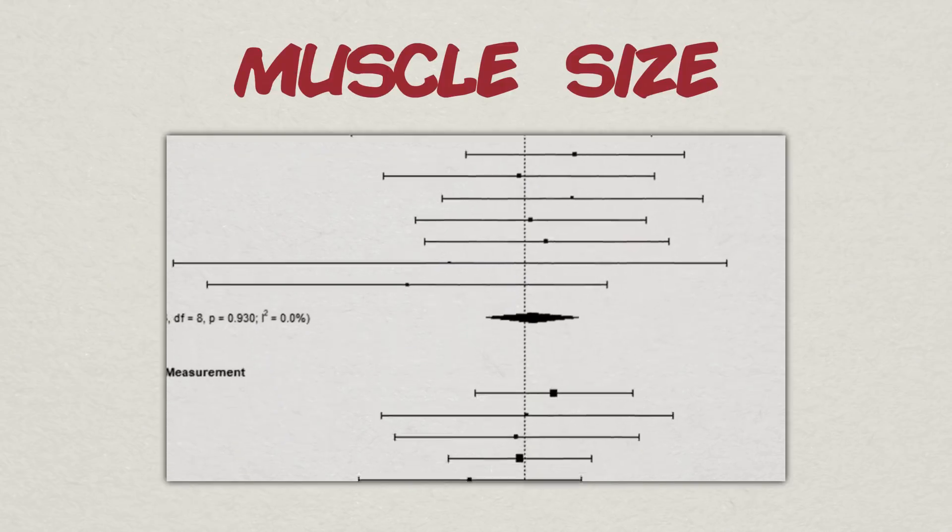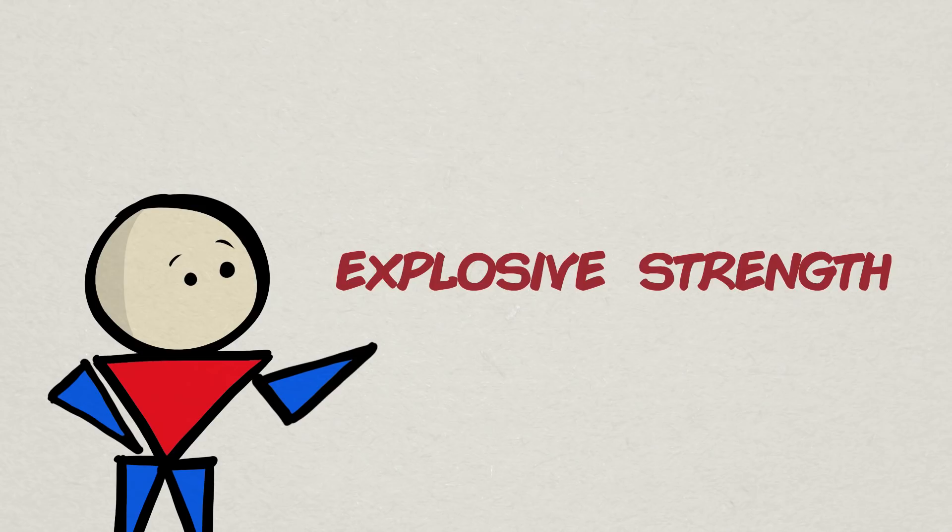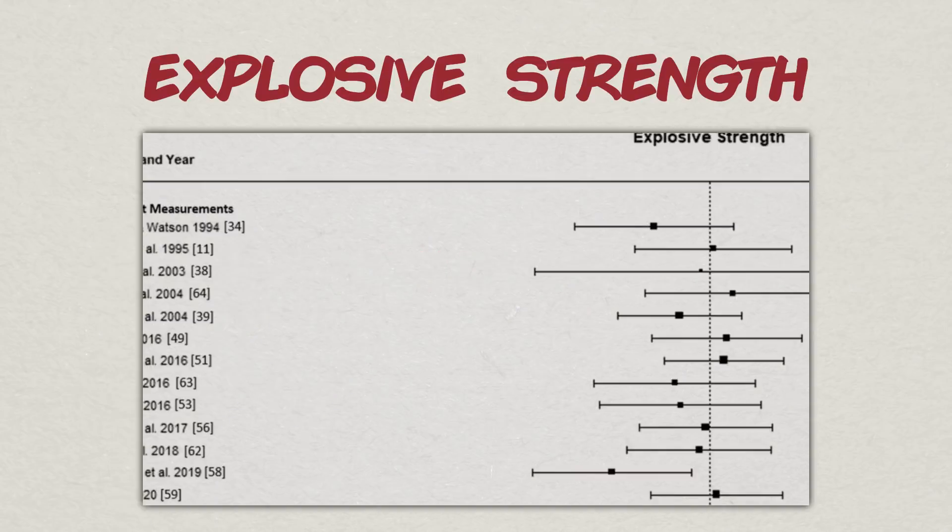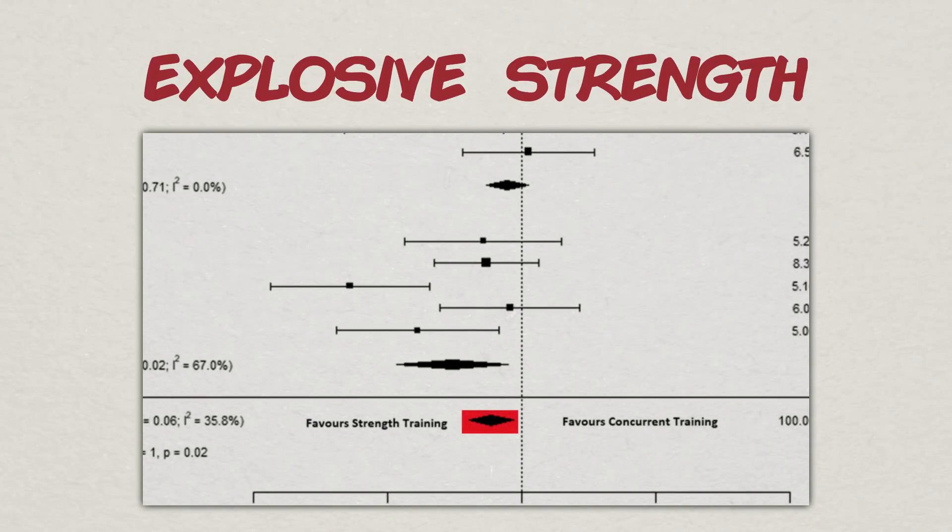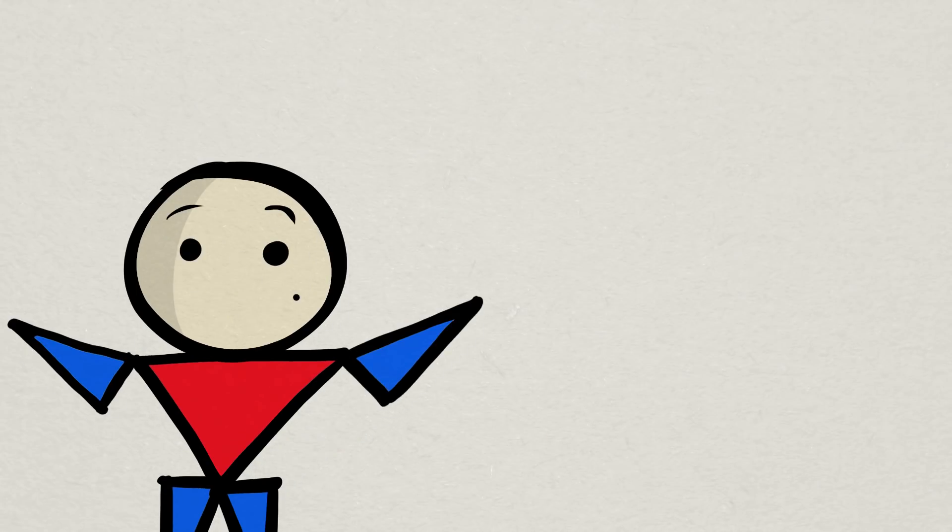Muscle growth also fortunately seemed to be pretty even whether you decide to strength train only or add cardio to it. Explosive strength, however, shakes things up a bit. In this case, there does seem to be some sort of interference effect when aerobic training is added to the mix. However, the little twist here is that it's not the case for all types of concurrent training.